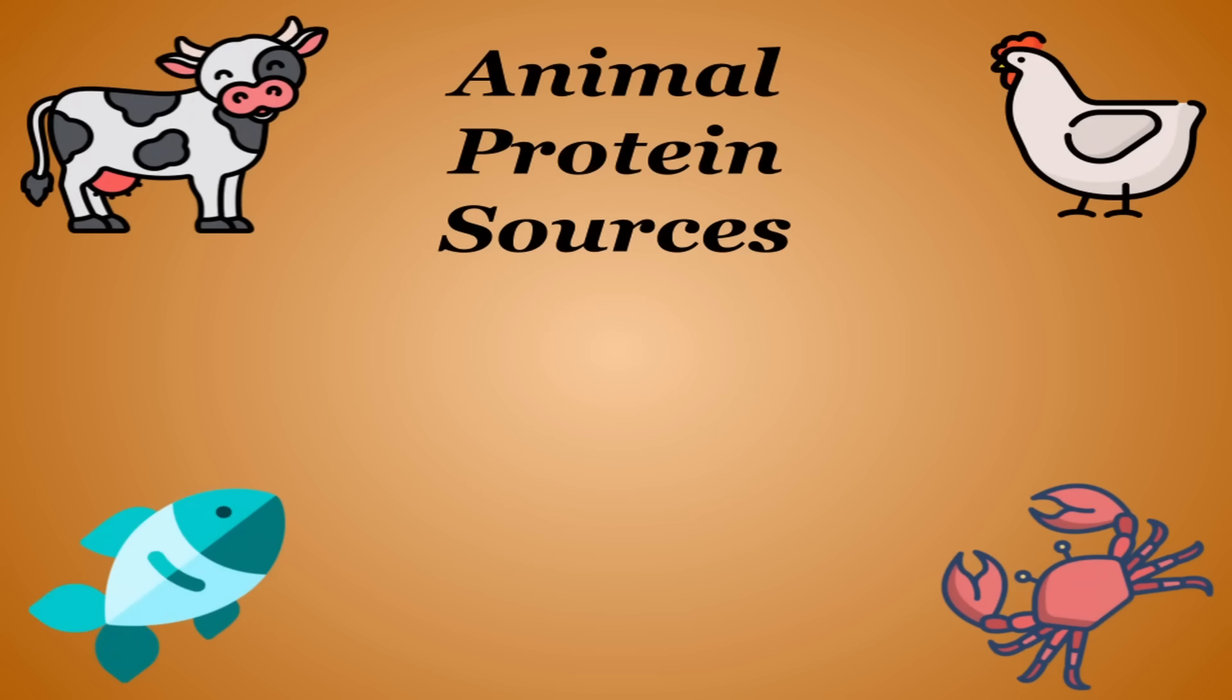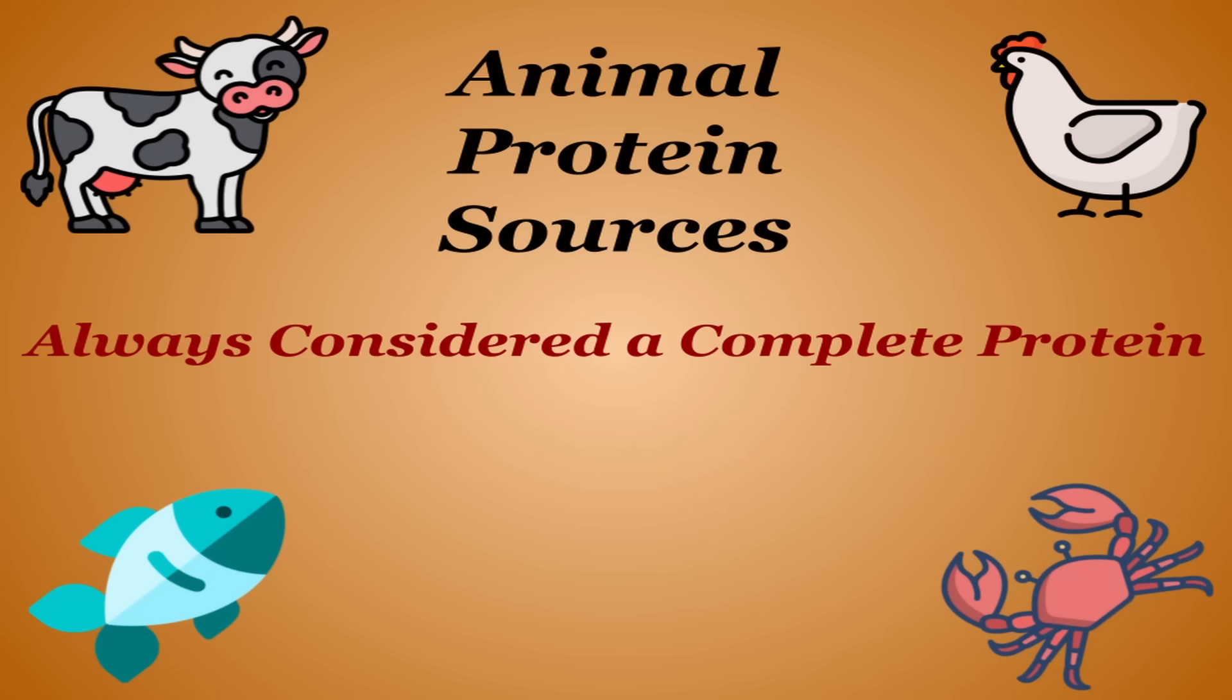Let's go ahead and take a look at some of those foods that people rely on for protein. First, let's take a look at animal-based protein sources. Animal products are always considered complete sources of protein due to containing all nine essential amino acids in ratios that are conducive for the body to use.